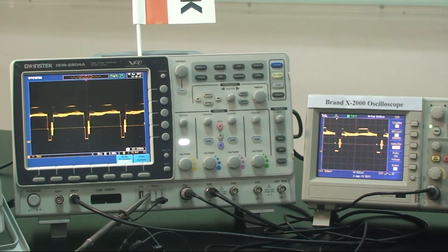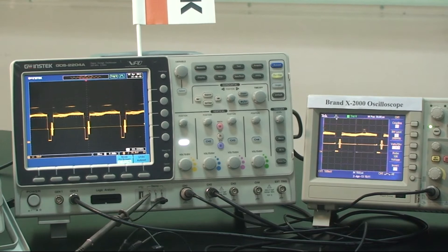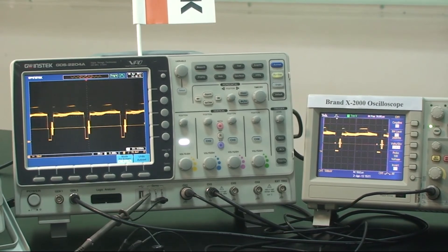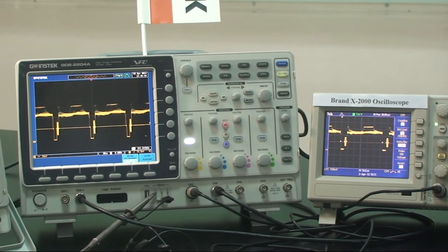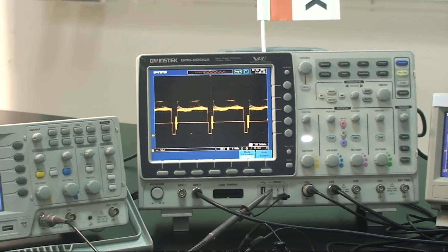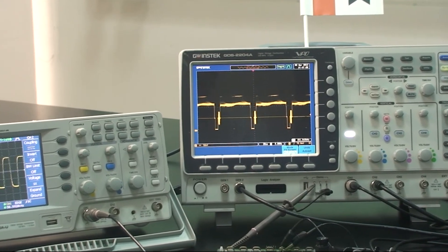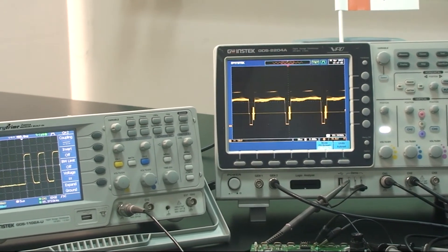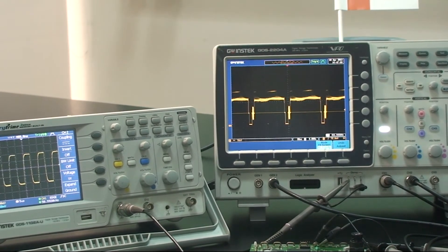Next, we are going to prove that GDS-2008 has the fastest waveform update rate of over 80,000 waveforms per second. We are going to use signals from the built-in function generator module of GDS-2008 as testing signals.